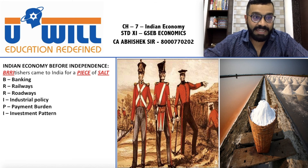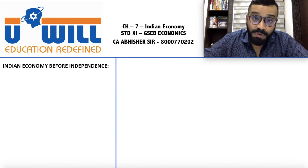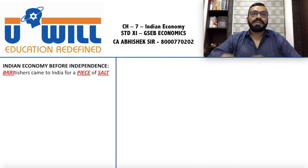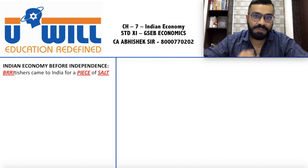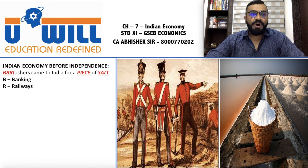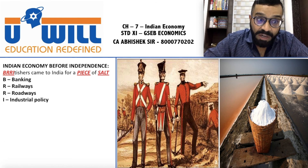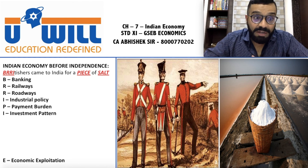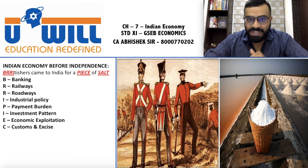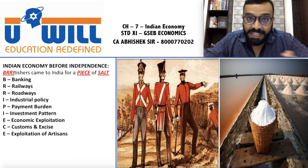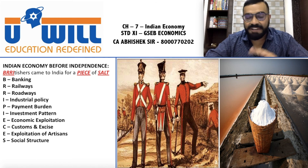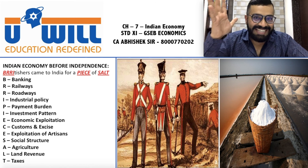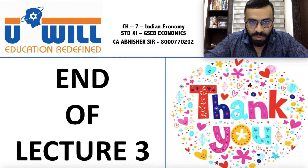So — Britishers came to India for a piece of salt: B for Banking, R for Railways, R for Roadways, I for Industrial Policy, P for Payment Burden, I for Investment Pattern, E for Economic Exploitation, C for Customs and Excise, E for Exploitation of Artisans, S for Social Structure, A for Agriculture, L for Land Revenue, and T for Taxes. Okay, understood — bus prepare ke liye itna hi. Okay bye.